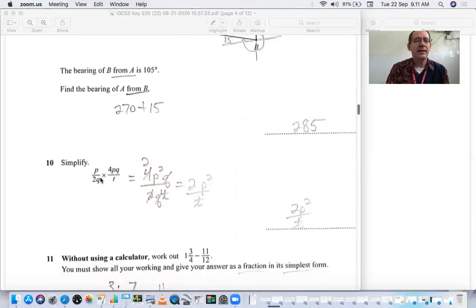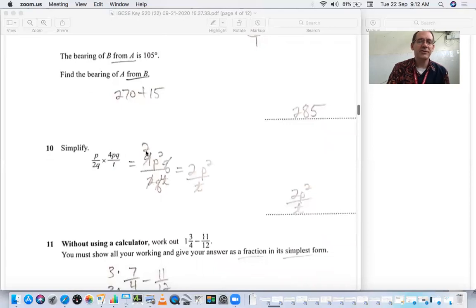Simplify. With multiplication, you just multiply straight across. So 4p squared q over 2qt. The 2 and the 4 cancel, leaving you with 2. The q's cancel, and that leaves you with 2p squared over t.